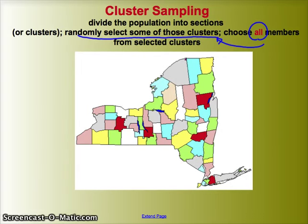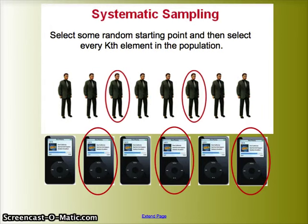An example of cluster sampling at the high school might be to break the high school up into classrooms, randomly select three classrooms as clusters, and then survey each student in those classrooms. Systematic sampling is also an acceptable method — it includes randomization as well. We pick some random starting point and then select every kth — third, fifth, fiftieth — element in the population. I might stand outside a grocery store and randomly select every thirtieth person that walks in. In manufacturing, I might pick a random starting point and then pick every tenth or fiftieth iPhone off the assembly line and test it for quality.